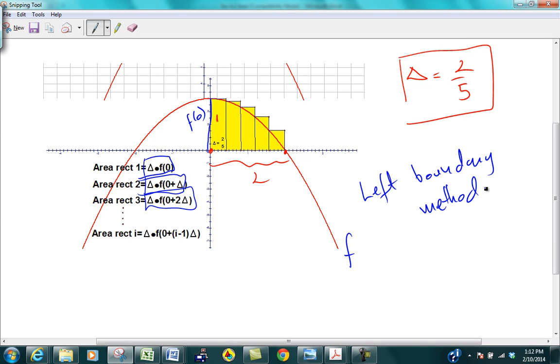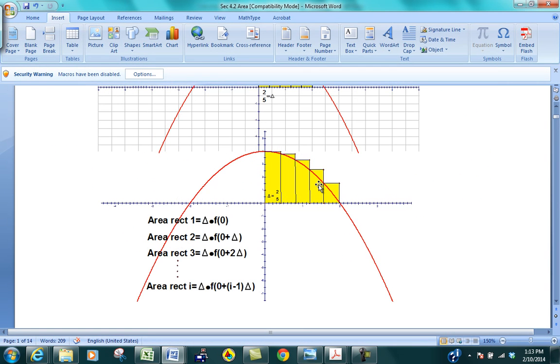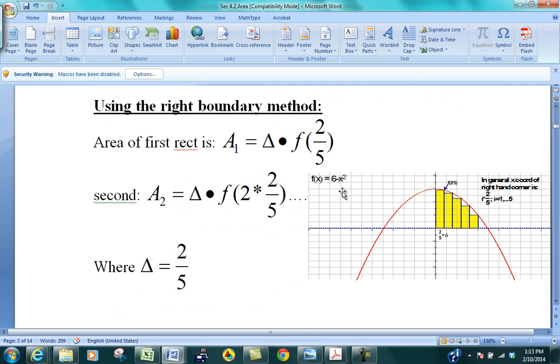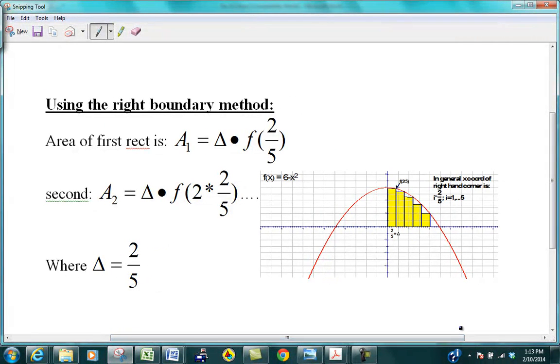And then later on, I don't think it's going to be today, but later on, next few days, because we're going to do 4.2 over 4 days, or something like that. So it's going to be a long time. I'll give you a more general formula for the left boundary method and the right boundary method. In some ways, it is already here, actually. But we'll come back to that. So that's left boundary method. Let's take a look at the right boundary method.